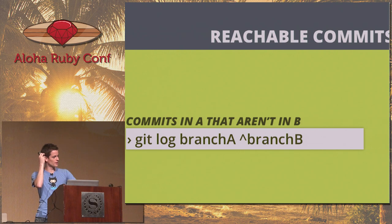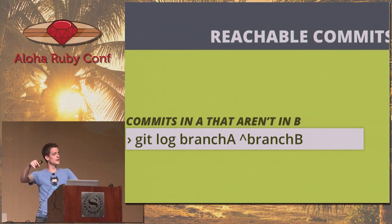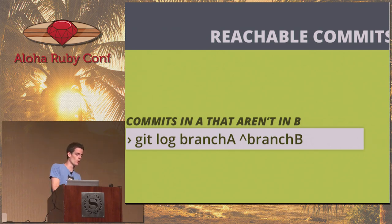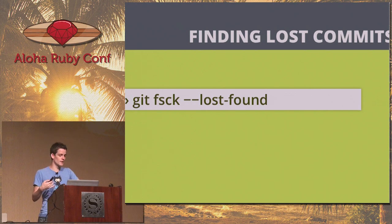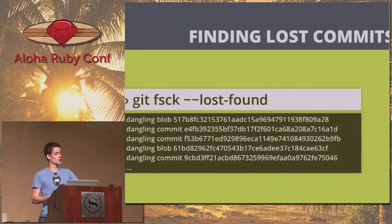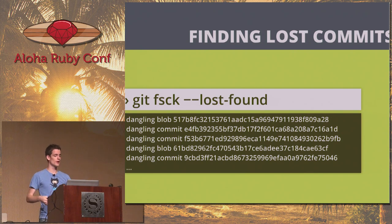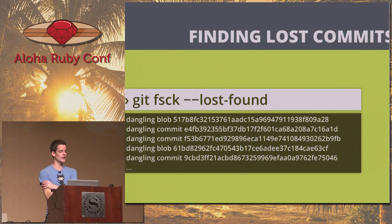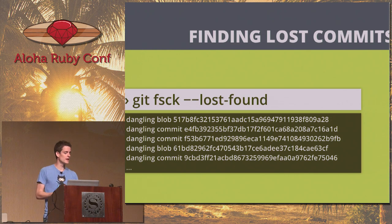Reachable commits: git log branchA ^branchB shows commits in A that are not in B. Also, --lost-found shows blobs and commits that aren't on a particular branch. If you delete a branch, it's actually fairly hard to permanently delete content in Git — it's usually stashed somewhere until you garbage collect. With --lost-found, this is pre-garbage-collecting: you can find that particular commit and pull it into your current branch. It's not actually lost at that point.